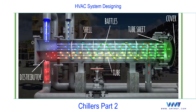These are all tubes. We can use this shell and tube as an evaporator or a condenser. It's easier to understand as a condenser since you already know the vapor compression cycle. If used as a condenser, it cools the refrigerant using water. If used as an evaporator, it cools the water using refrigerant. In both cases it's a heat exchanger, but the roles are reversed.